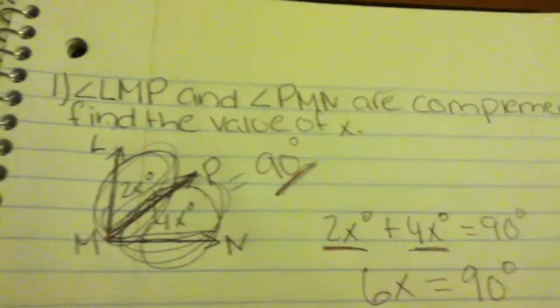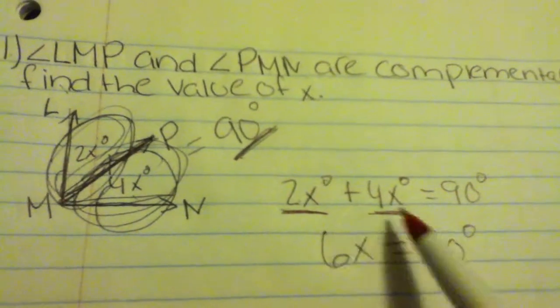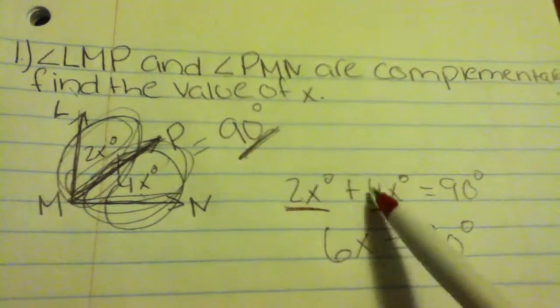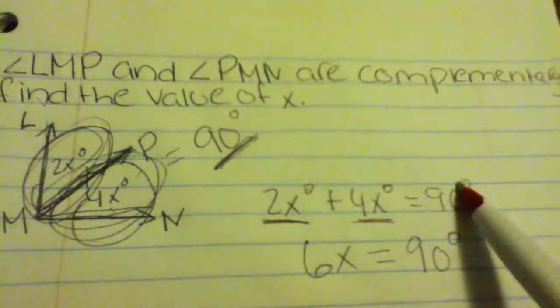We're going to start by writing down the information we know. We write down angle LMP which is 2x degrees plus angle PMN which is 4x degrees and it equals 90 degrees.